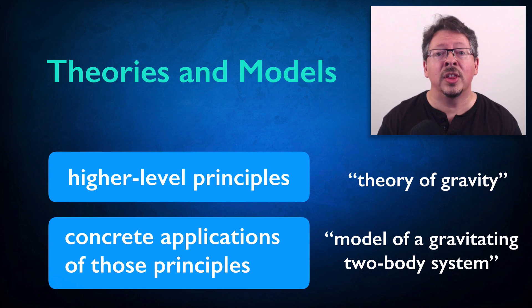But when we want to apply these principles to a specific type of physical system with well-defined parameters, like the motions of a two-body system under the influence of gravity, like the sun and a planet, or a binary star system, then we're more likely to call that a model of a gravitational system.